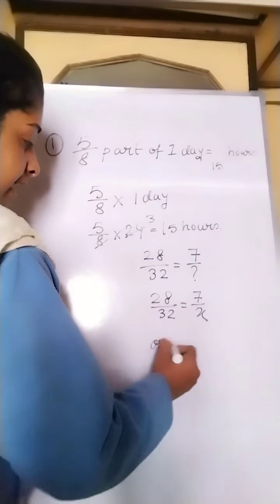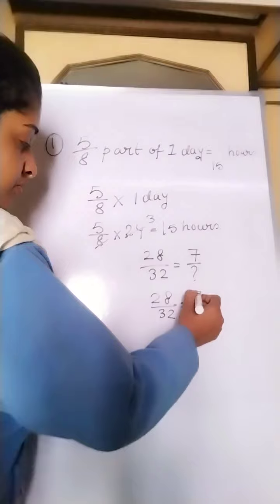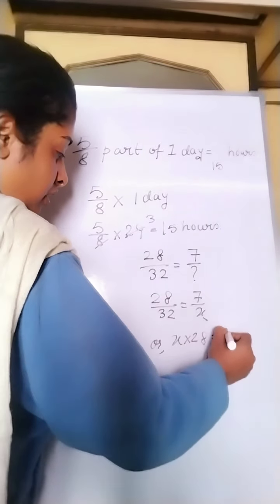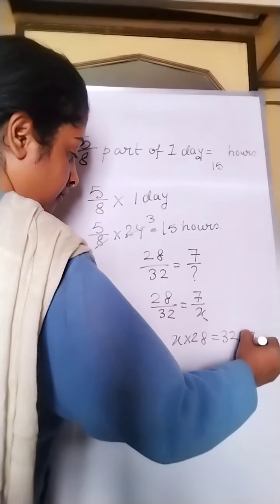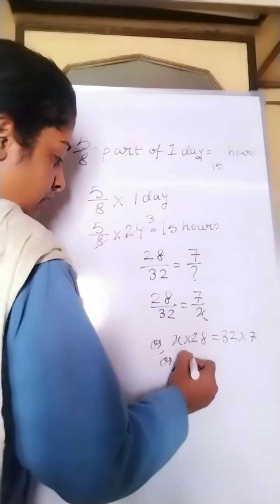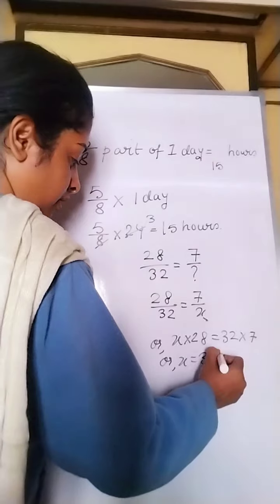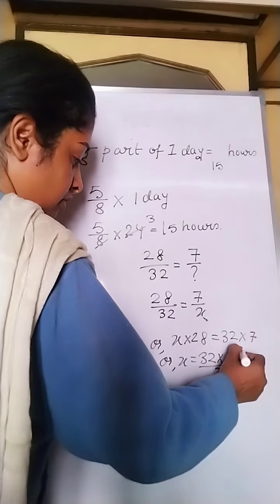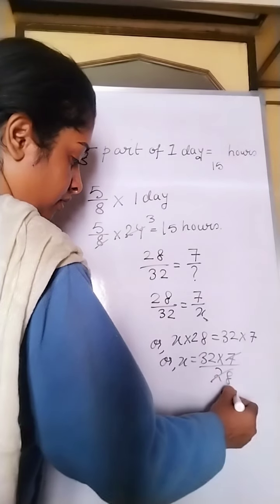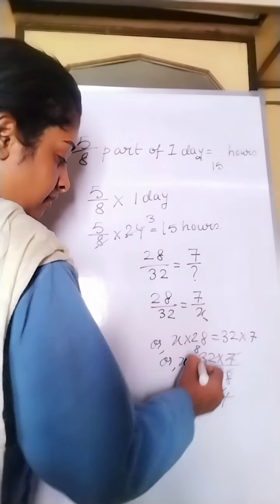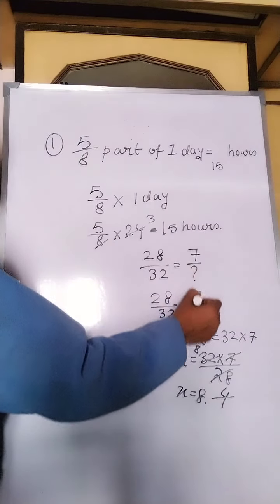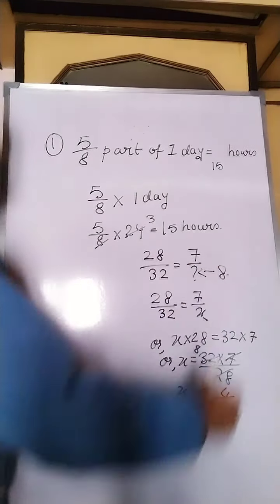Or x you will bring upward and cross multiply. x into 28 is equal to 32 into 7, or x equals to 32 into 7 by 28. So this 4, 4, 8th, answer will be x equals to 8. That means the missing number over here is 8.